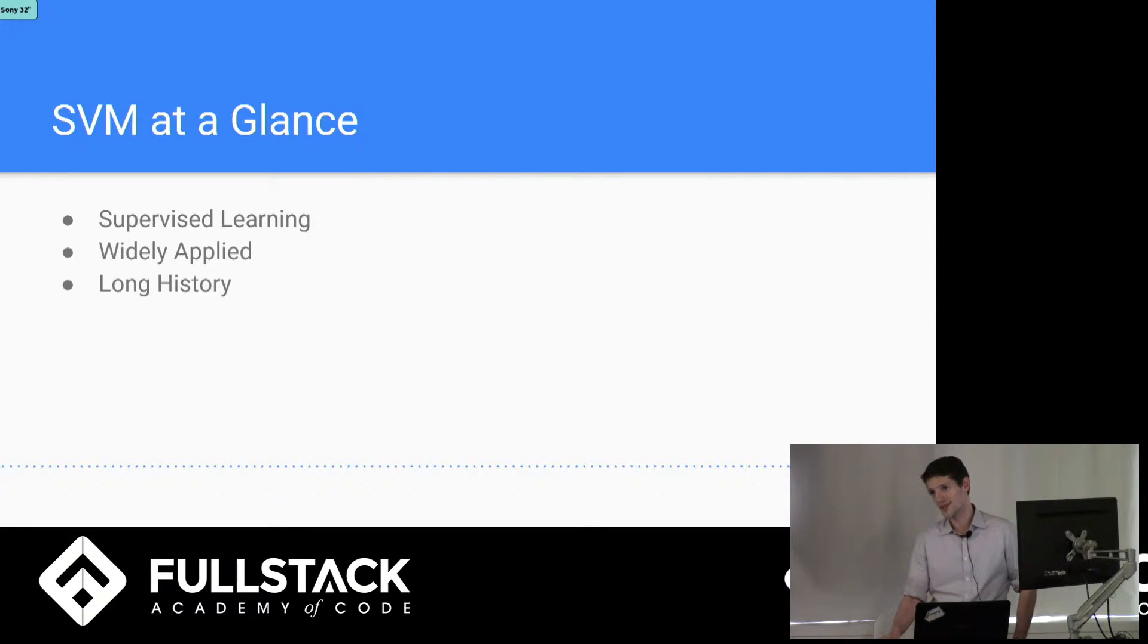And this is used in many machine learning algorithms today, most notably things like facial expressions, text classification, speech recognition, or any of the things Google or Facebook do. This might be one of the machine learning tools in their toolkit.